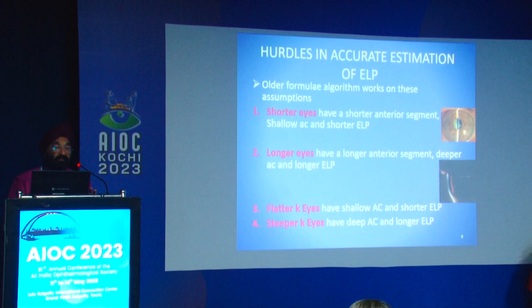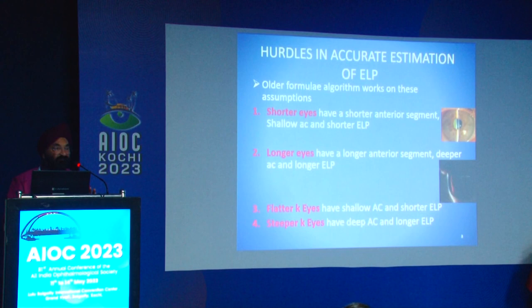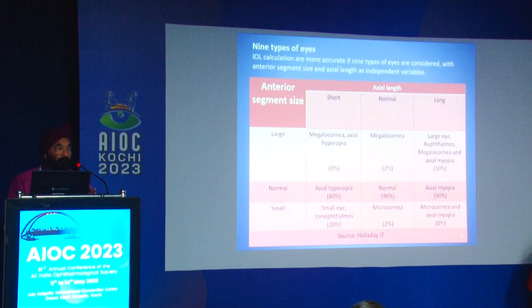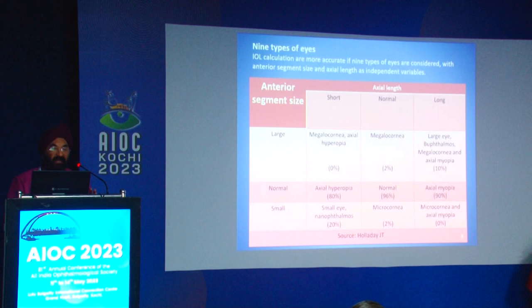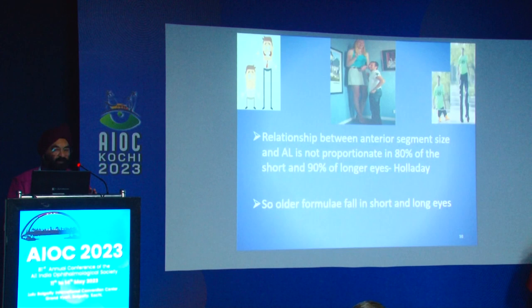There were hurdles in accurate estimation of effective lens position. Older formulas assumed shorter and flatter K eyes have shallow anterior chambers and shorter effective lens position, while longer and steeper K eyes have longer effective lens position. But Holliday taught us there are nine types of eyes — even in eyes with normal anterior segment, 80% may have short axial length and 90% may have long axial length. So the relationship between anterior segment size and axial length is not proportionate in 80% of short and 90% of long eyes, meaning older formulas are bound to fail in shorter and longer eyes.